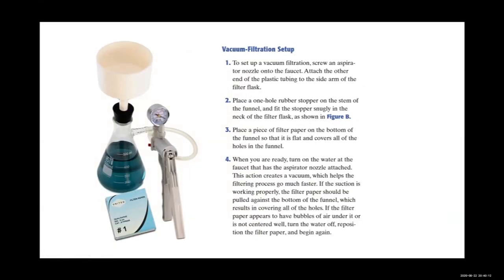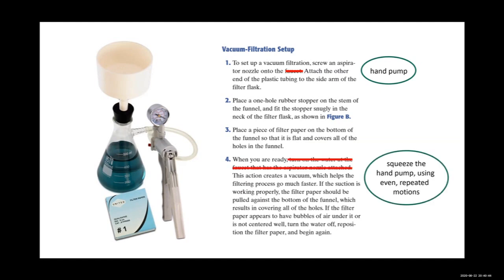To set up vacuum filtration, attach an aspirator nozzle onto the hand pump and connect the other end of the plastic tubing to the side arm of the filter flask. Place a one-hole rubber stopper on the stem of the funnel and fit it snugly into the neck of the filter flask. Place a piece of filter paper flat on the bottom of the funnel, covering all the holes. Squeeze the hand pump using even repeated motions to create a vacuum. If the filter paper has air bubbles under it or is not centered, reposition it and begin again.